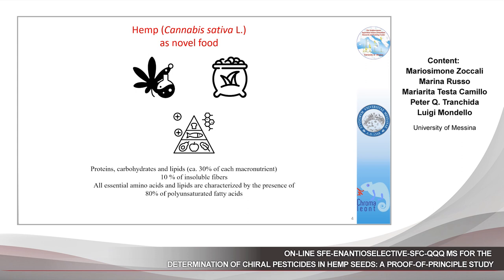Moreover, the proteins present contain all essential amino acids, and lipids are characterized by the presence of 80% of polyunsaturated fatty acids, particularly linoleic and alpha-linolenic acids. This aspect led to a re-evaluation in the use of hemp seeds in human nutrition, encouraging the cultivation of industrial hemp.